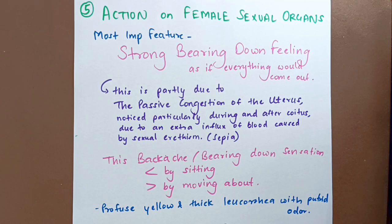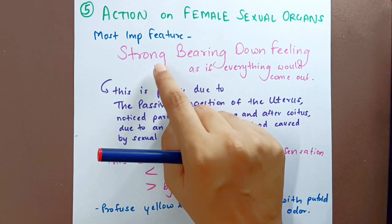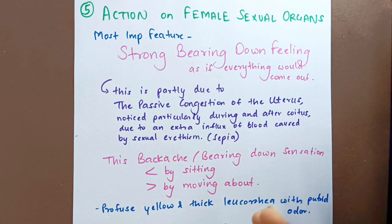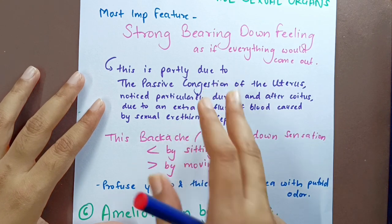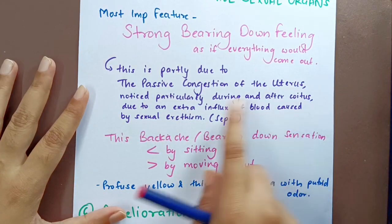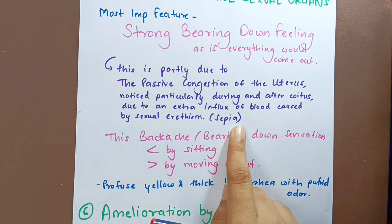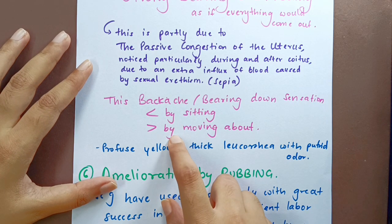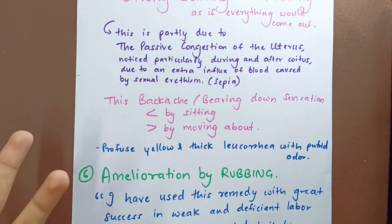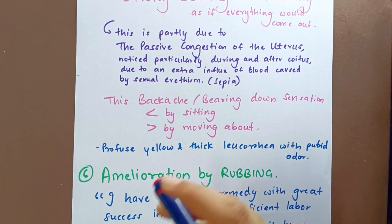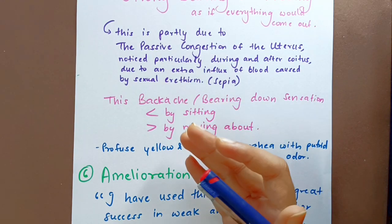The fifth characteristic is its action on female sexual organs. The most important feature is a strong bearing down feeling as if everything would come out, partly due to passive congestion of the uterus — noticed particularly during and after coitus. The comparative remedy is Sepia. This bearing down sensation is aggravated by sitting and ameliorated by moving about. Profuse yellow and thick leucorrhoea with putrid odor is present. This is also an important remedy for sterility due to ejection of semen after coitus.